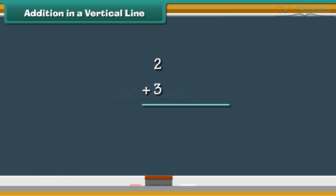Addition in a vertical line. Let us now add numbers vertically. To do that, let us write the numbers one below the other. To add two and three vertically, write the two numbers one below the other. Draw two vertical lines next to two and three vertical lines next to three. Count the vertical lines: two, three, four, five. Therefore, two plus three is five.